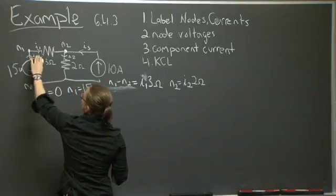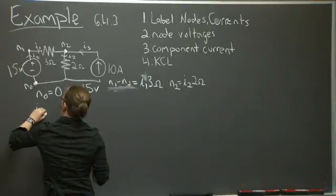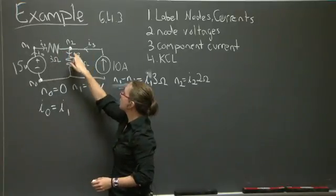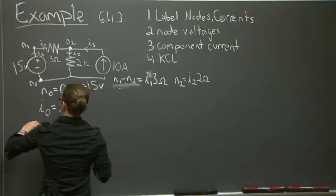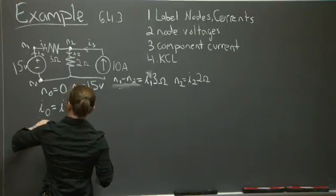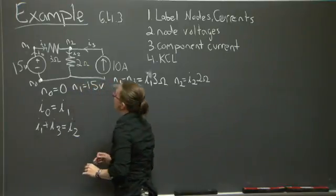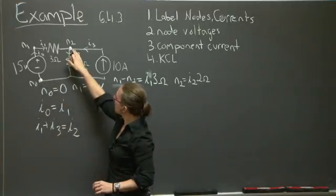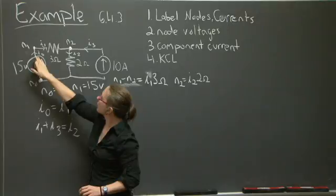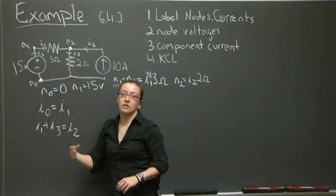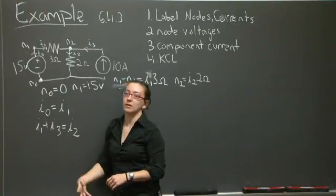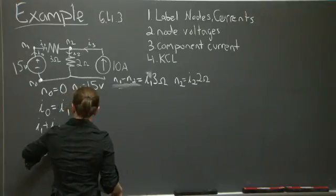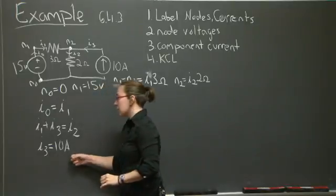Flowing into N1 is I0, and flowing out is I1. So I0 is going to be equal to I1. Flowing into N2 is I1 and I3, and flowing out of N2 is I2. Flowing into N0 is I2, and flowing out of N0 is I0 and I3. But we're almost certainly not going to end up using that equation, because it's the last of our KCL equations and is dependent upon the other equations that we've already written out for KCL.